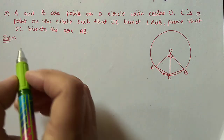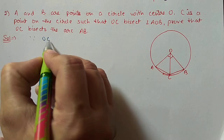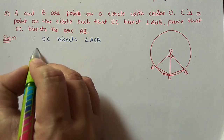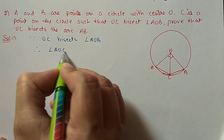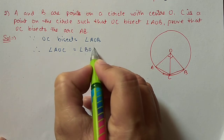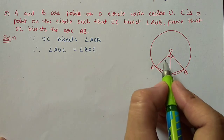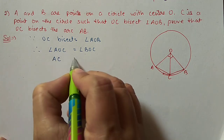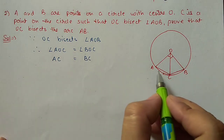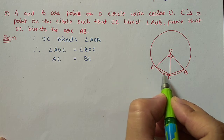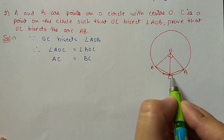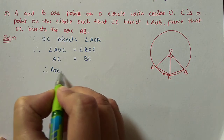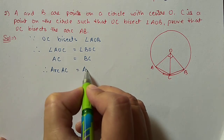We will start the solution. Because OC bisects angle AOB, we can write angle AOC is equal to angle BOC — these two angles are equal. Because these two angles are equal, their chords will also be equal. We can write AC is equal to BC. And we know if two chords are equal, then arc AC and arc BC will also be equal.